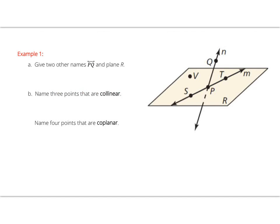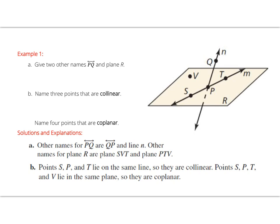Let's look at example one together. Part A: give two other names for line PQ and plane R. The dotted portion of line PQ helps us realize the line is passing through the plane, not contained in it. Two other names for PQ: we could rearrange and say QP. To name plane R, we can name any three non-collinear points contained inside the plane — SVP, SVT, SPV — any combination of three non-collinear points works. Pause the video here and take a moment to capture these ideas in your notes.